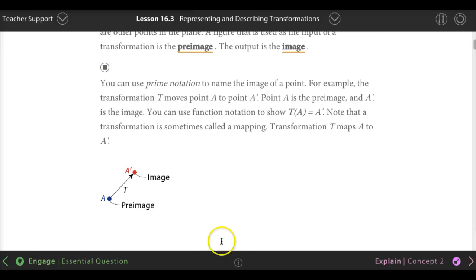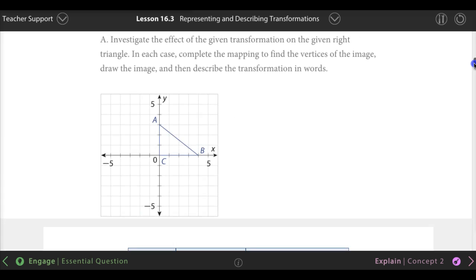Let's listen to this part. You can use prime notation to name the image of a point. For example, the transformation T moves point A to point A prime. Point A is the pre-image. I just wanted you to hear the part where it says A prime. You see the little thing over there? You read it A prime. That's really important. Just like I said, here's the pre-image. That's where you start off, and then once you move it, this is the image, and you mark it as A prime.